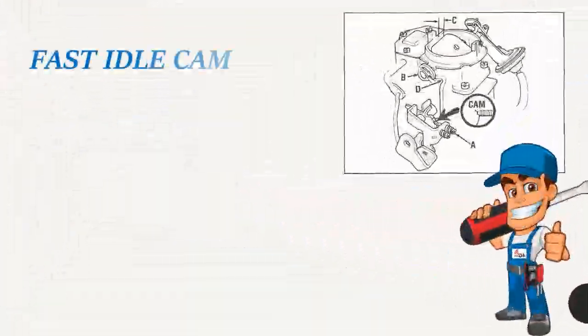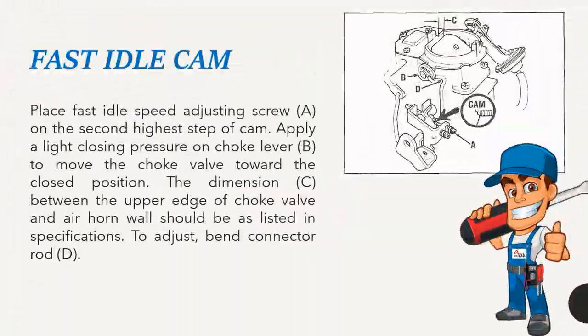Fast idle cam: Place fast idle speed adjusting screw A on the second highest step of cam. Apply a light closing pressure on choke lever B to move the choke valve toward the closed position. The dimension C between the upper edge of choke valve and air horn wall should be as listed in specifications. To adjust, bend connector rod D.